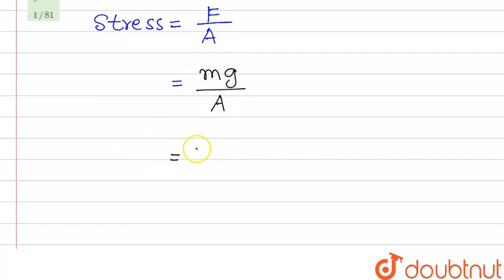So we can write density rho, that is density into volume, into g divided by area.